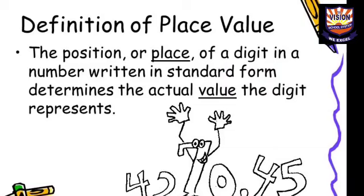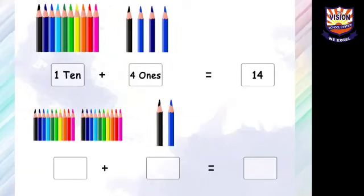Let us discuss about place value. The position or place of a digit in a number written in standard form determines the actual value the digit represents. Let's have a look at some examples.